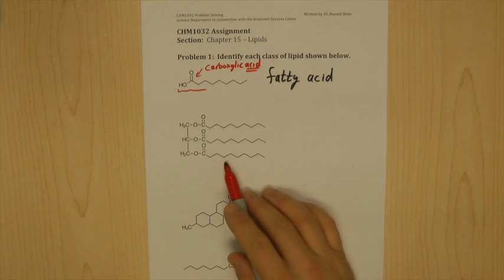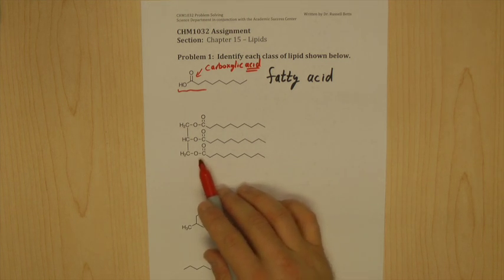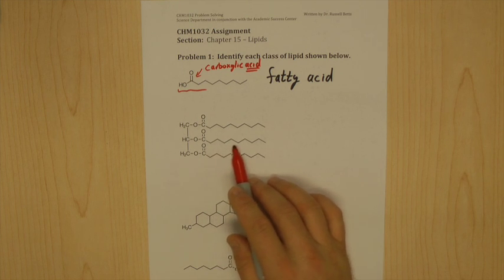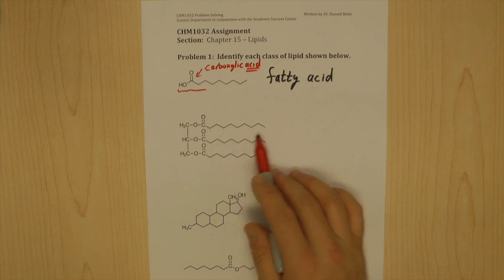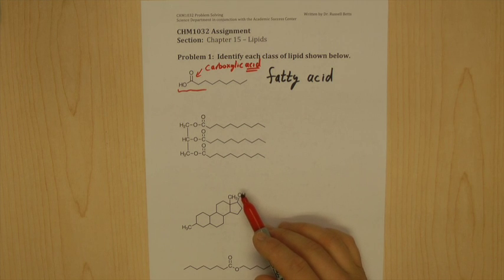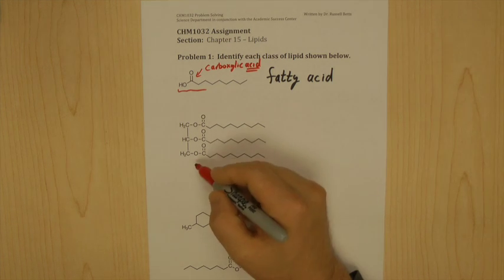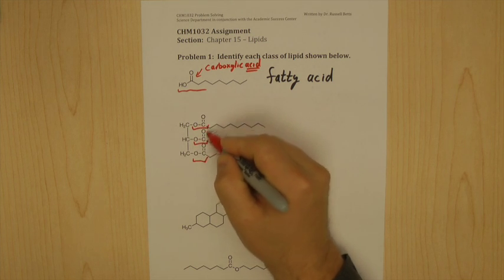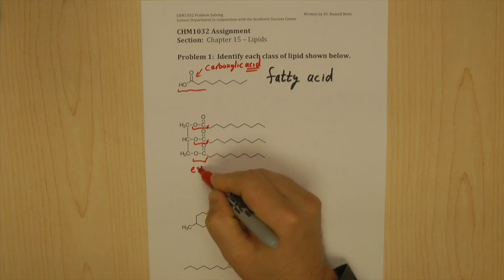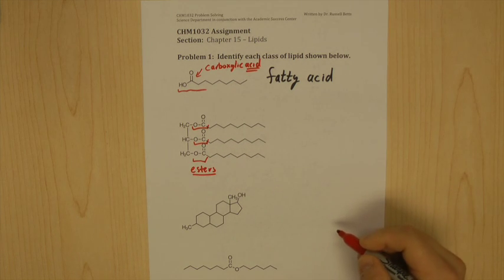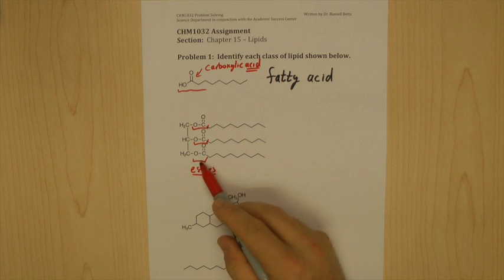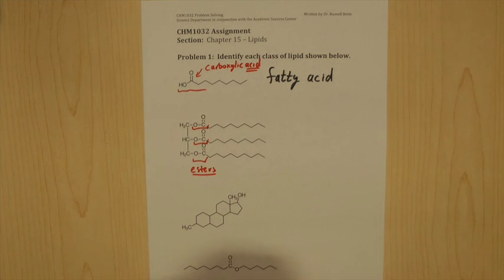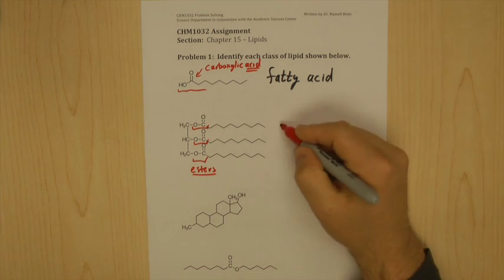Now, the next one. A lot more complicated but look. Long chain of hydrocarbons. It's got three of them now, that's all. Three long chains of hydrocarbons. And notice esters. Long chain of hydrocarbons that are esters. And there's three of them. This is a triacylglycerol.